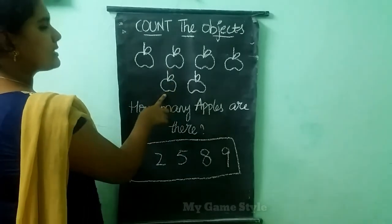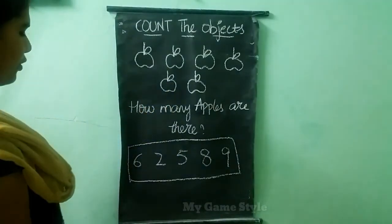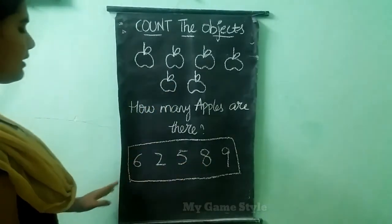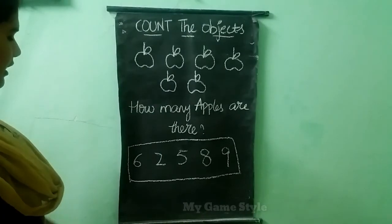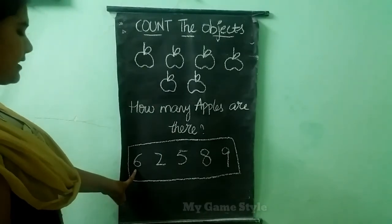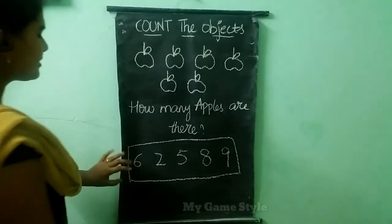Here total 6 apples are there. So where is 6 number, children? Here it is 6. This is the correct answer.